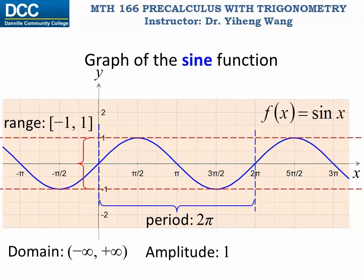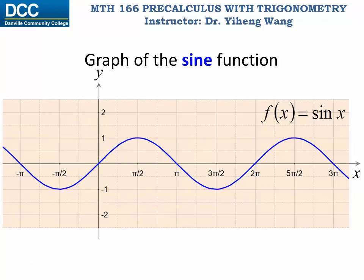The graph of the sine function is symmetrical about the origin, which makes it an odd function. When we sketch the graph for the sine function, we only need to sketch one period, because after that the graph starts to repeat itself. In order to sketch this one period, it's useful to remember five special points.